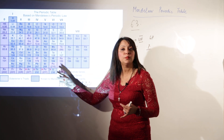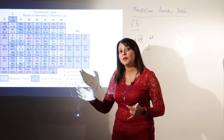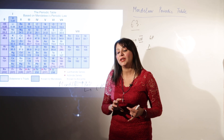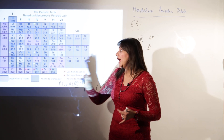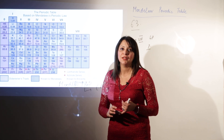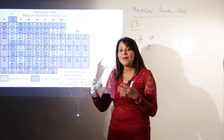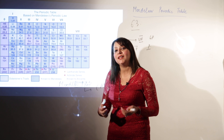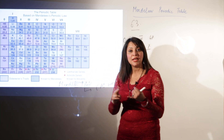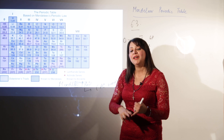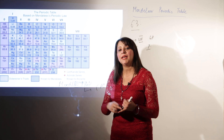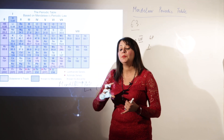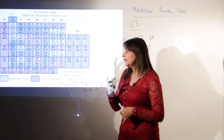The existence of elements marked with purple areas in the table was predicted by Mendeleev before their actual discovery. Later, those elements were indeed discovered and placed exactly in the spaces Mendeleev had left — it was a great achievement to predict something not yet found in nature, and have it confirmed later.